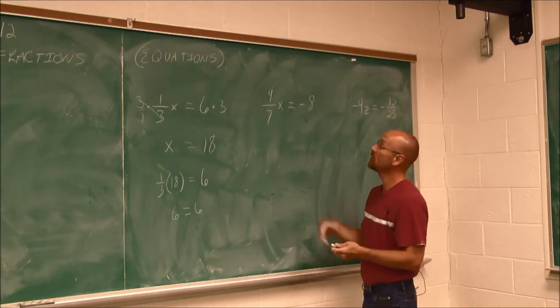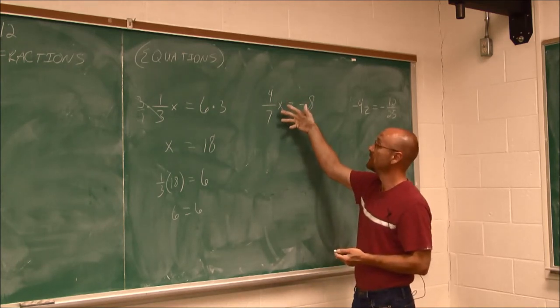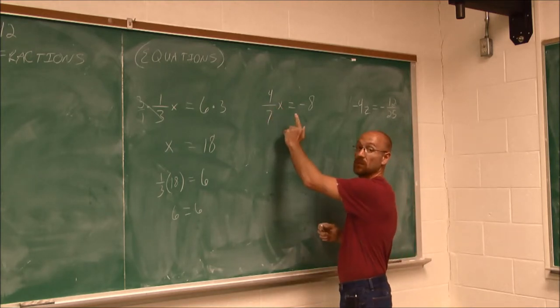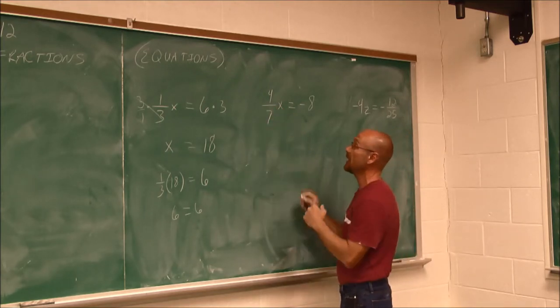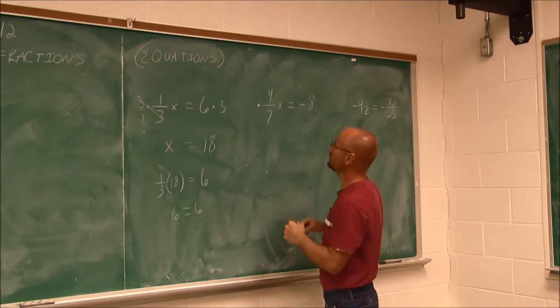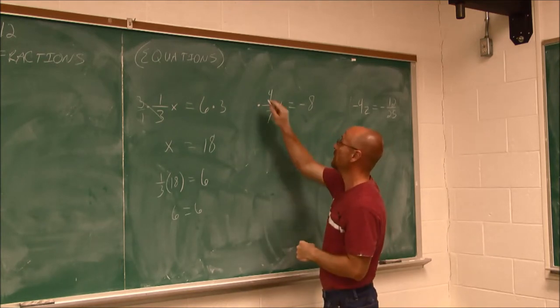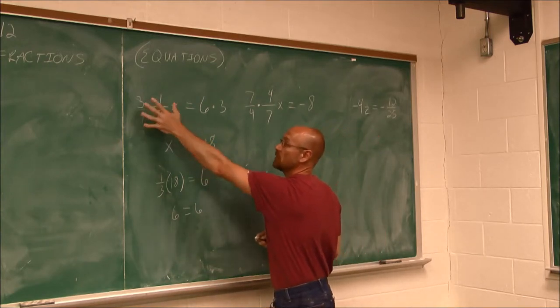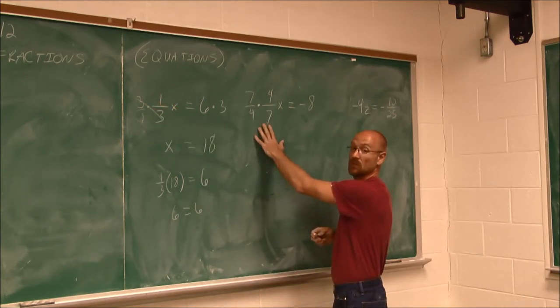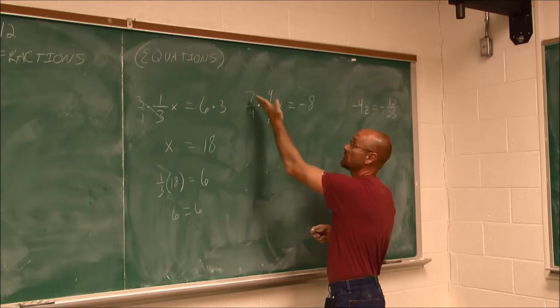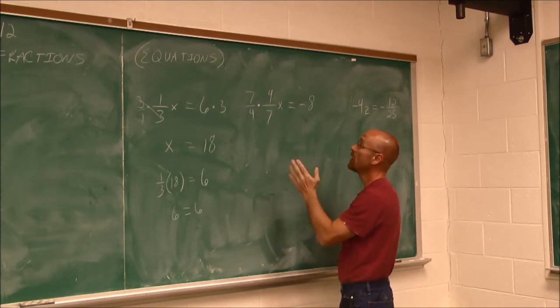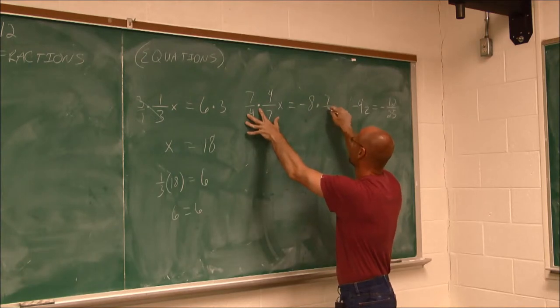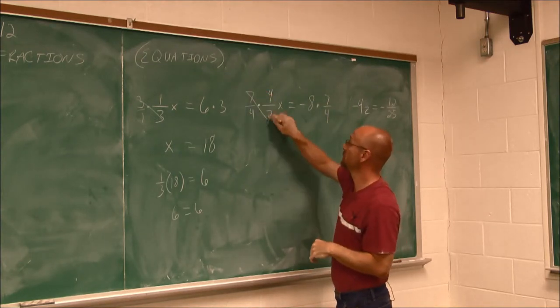Let's look at the next example. What if my reciprocal isn't a nice whole number, not an integer? I'm still going to multiply by the reciprocal, just like I did in that example. What is the reciprocal of 4/7? It would be 7/4. And just like this reduced to 1, this will also reduce to 1. The 4s will reduce. The 7s will reduce to 1. But what I do to one side of an equation, I always do to the other.